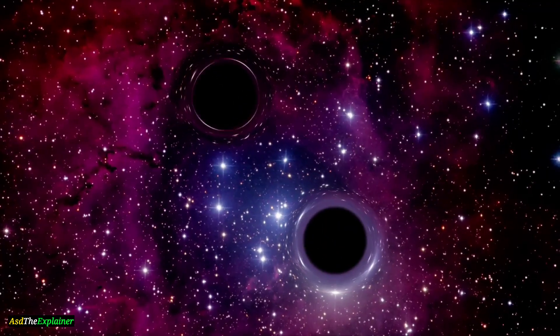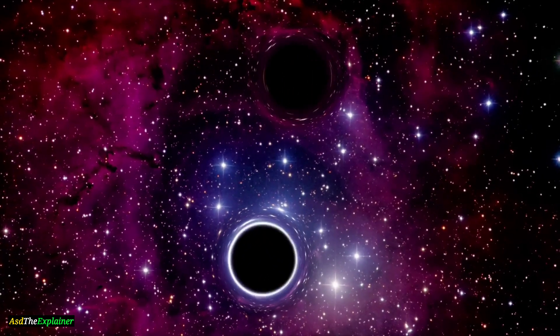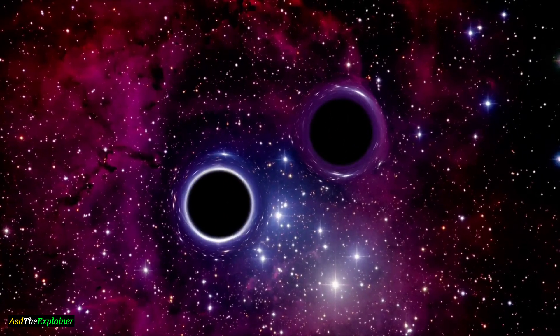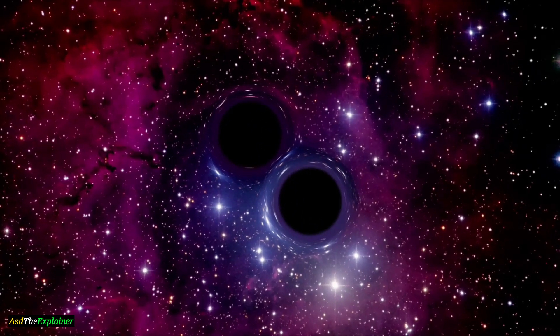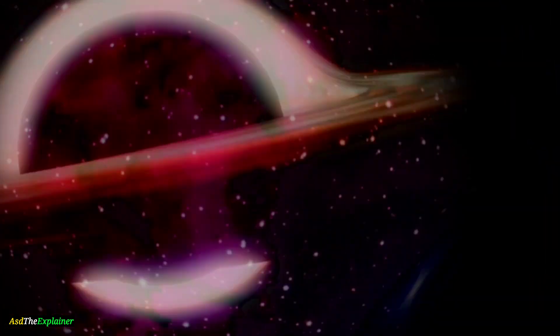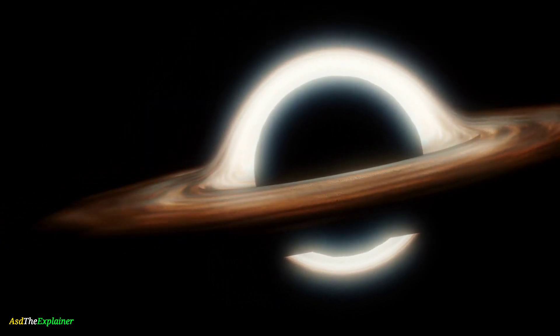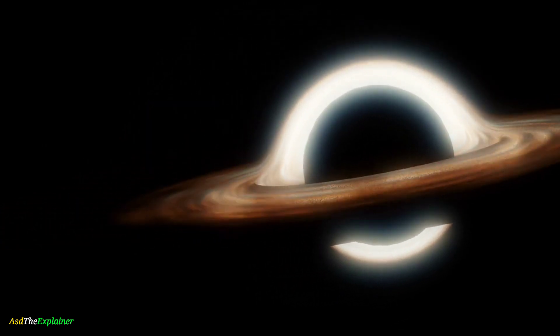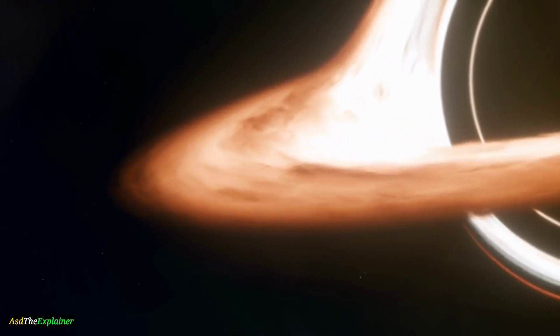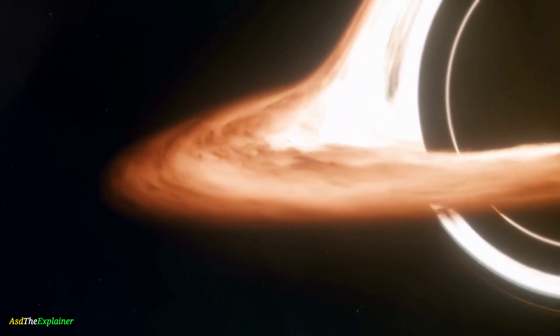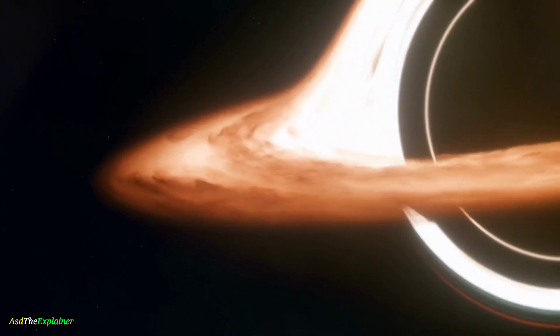Black holes come in different sizes, from small ones that are just a few times the mass of our sun to supermassive ones that can contain billions of solar masses. Stellar black holes are the most common type and form from the collapse of a single massive star, while supermassive black holes are found at the center of galaxies and are thought to form from the merging of smaller black holes.